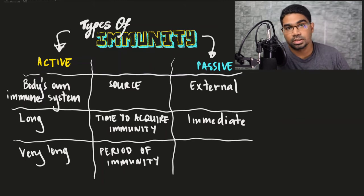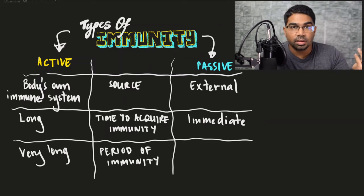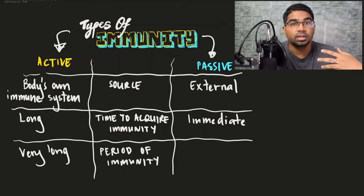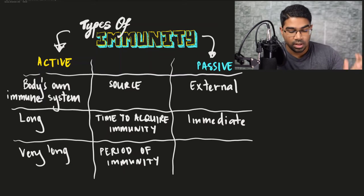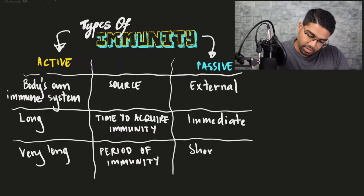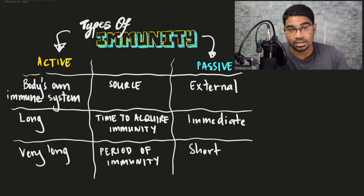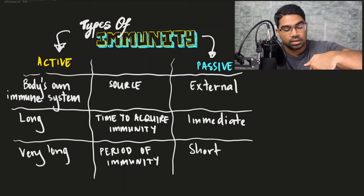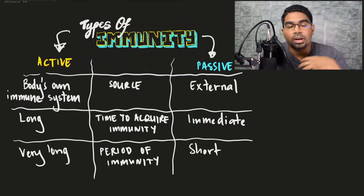An example is the chickenpox vaccine — once you get chickenpox or are injected with the chickenpox vaccine, the effect is usually a lifetime and you don't have to take it again. For passive immunity, since our body did not produce the antibodies and they were simply introduced into the body, once the antibodies degrade they will no longer be produced. The effect is short — it may last a few weeks to a few months, but after that it will drop very quickly.